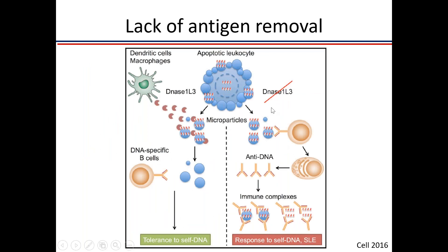If there is impaired removal of apoptotic debris, whenever cell death or apoptosis occurs, DNA and nucleosomes are released and need to be digested by circulating DNA enzymes like DNase I and DNase I-L3. If these are defective, large amounts of circulating DNA persist, activating self-reactive DNA-specific B cells and generating large amounts of anti-dsDNA antibodies — a key mechanism in lupus pathogenesis.